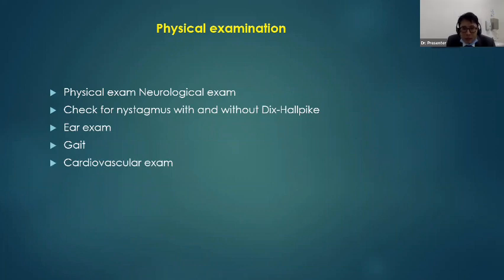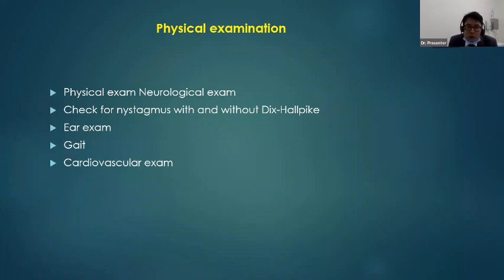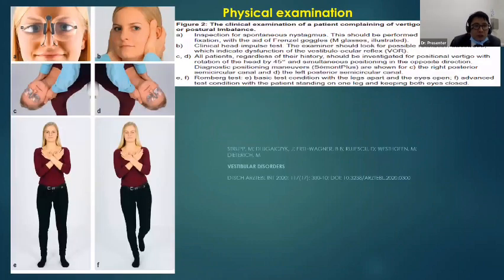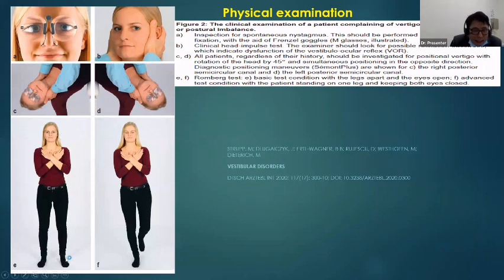I will tell you about the Hallpike maneuver and ear exam and gait. Remember, cardiovascular examination is as important as neurological examination. Other systemic examination is needed to find out if the patient has diabetes mellitus, anemia, renal or liver problems, or hypoglycemia. The nystagmus glasses use a magnifying lens so you can look at the patient. The Romberg test: ask the patient to close their eyes and put their feet together in the attention position. If the patient spreads both feet or opens their eyes or becomes imbalanced, that is Romberg positive.